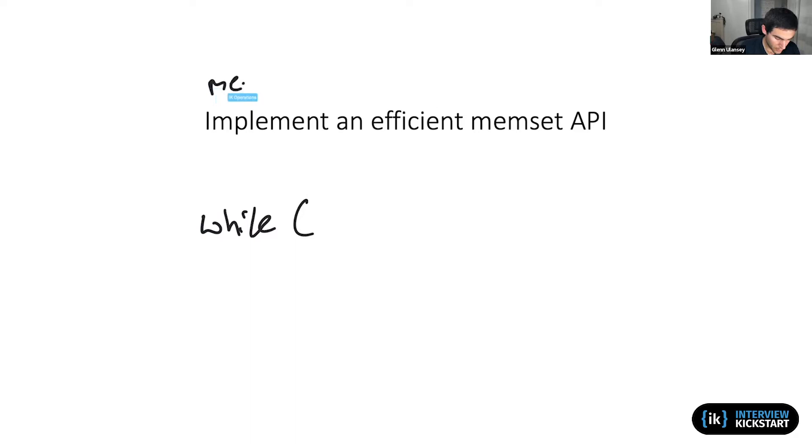So memset - we have some destination buffer that we're trying to set, s. We have some character c that we want to repeat size number of times into our destination buffer.